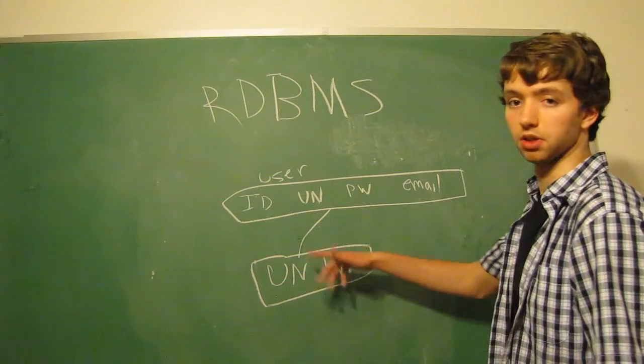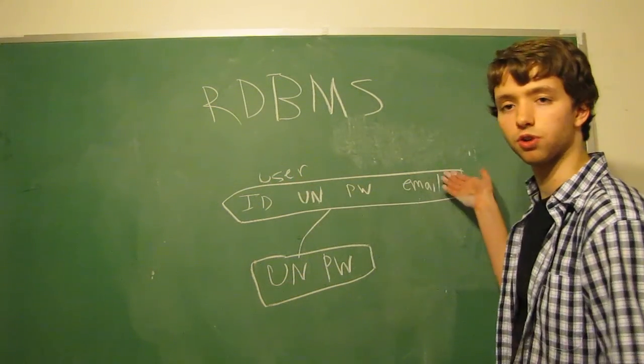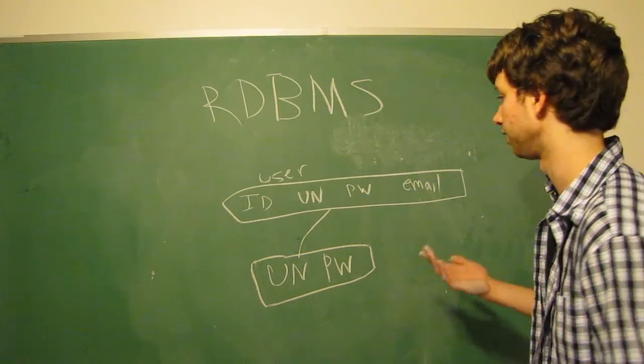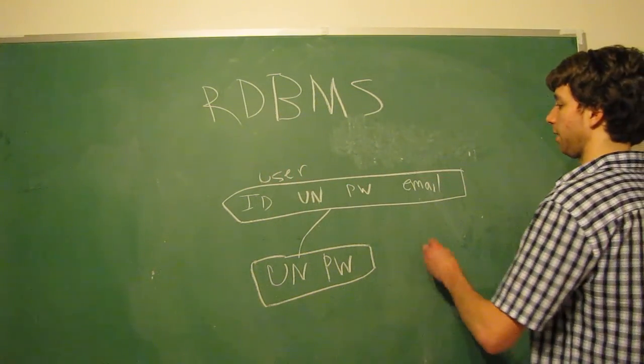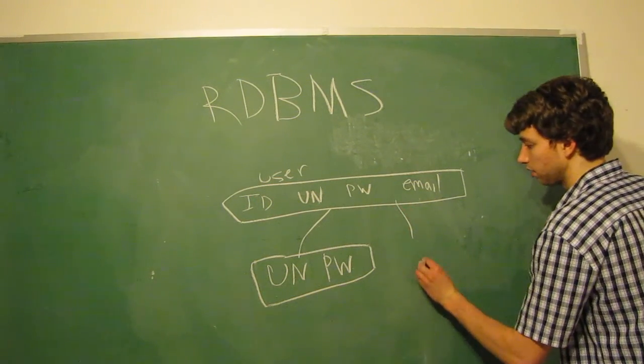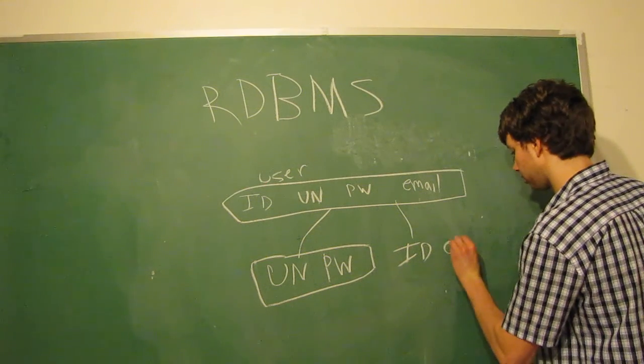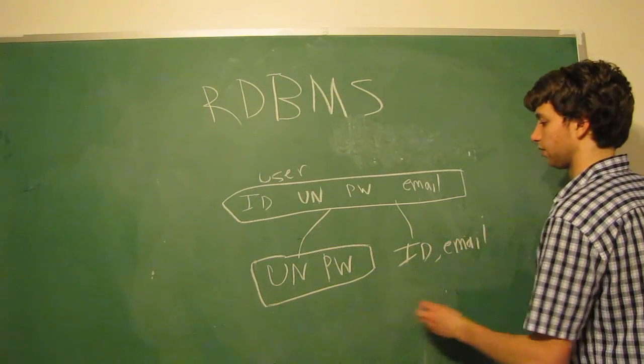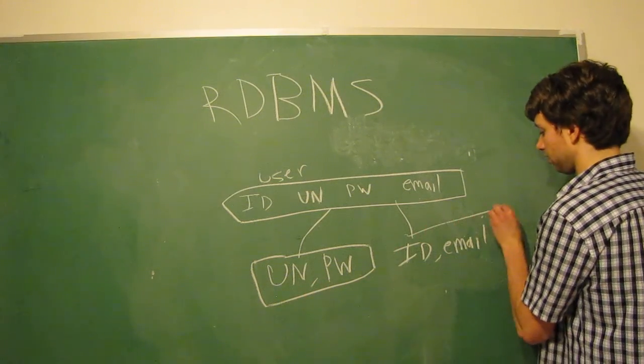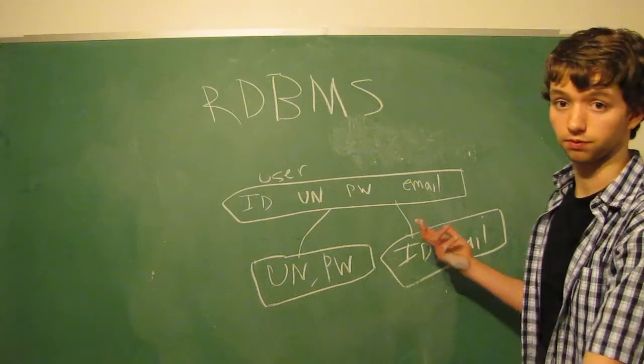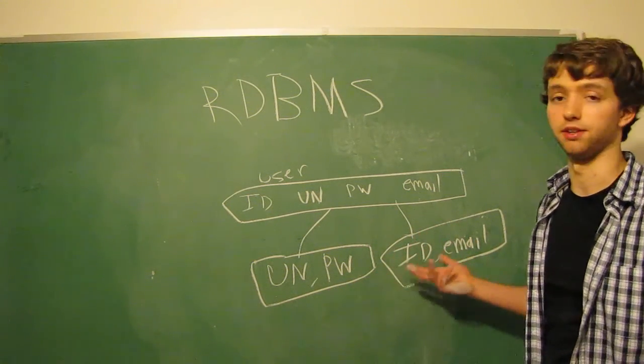So this is a specific view. We can select the username and the password, but the internal structure of the data has not changed. This is still how it's stored within the database. Jamie, on the other hand, she cares about the ID and the email. So she creates a new view. So these are both called views. So the view mechanism allows us to create different views.